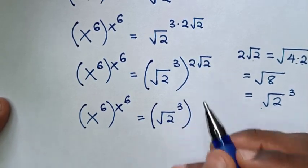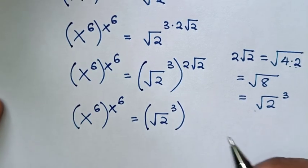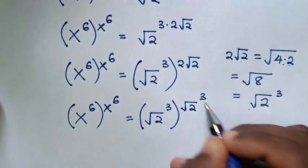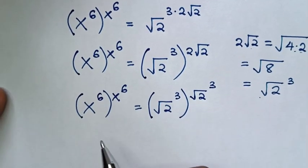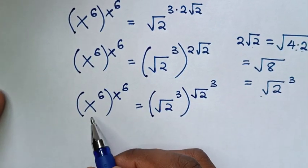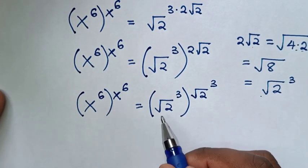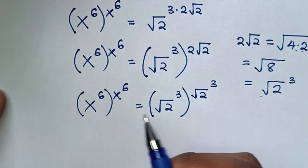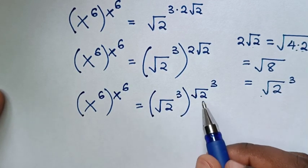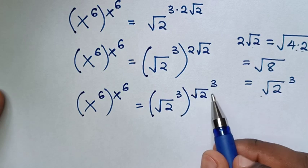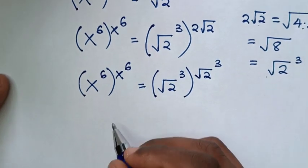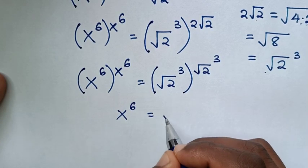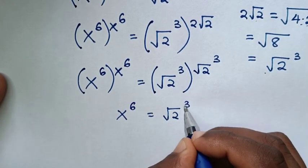In here we substitute square root of 2 power of 3. So when you compare the bases, x power of 6 is equal to square root of 2 power of 3, and the powers, x power of 6 is equal to square root of 2 power of 3. So our equation gives x power of 6 is equal to square root of 2 power of 3.